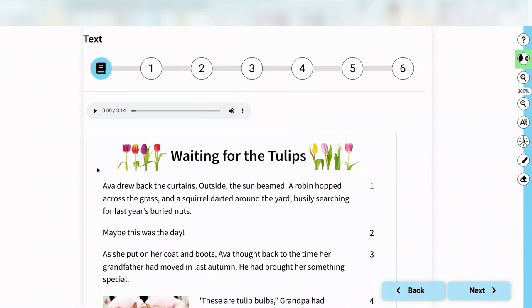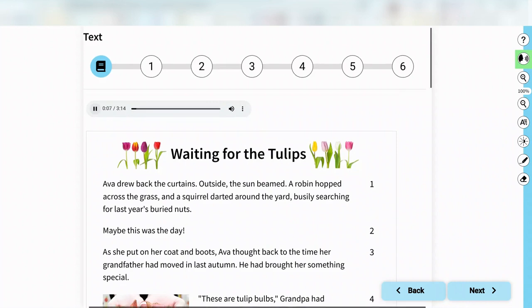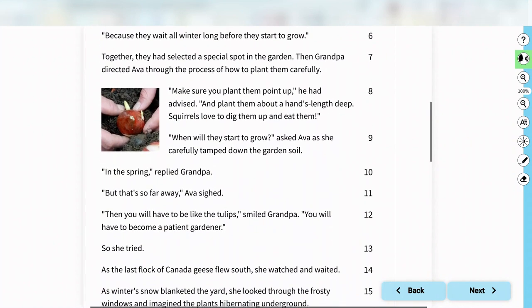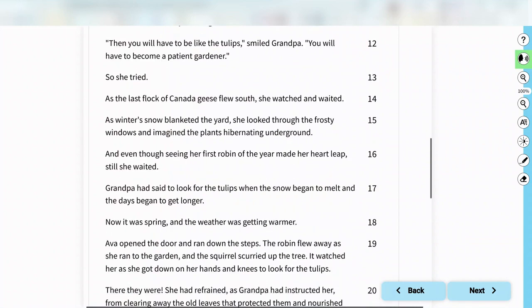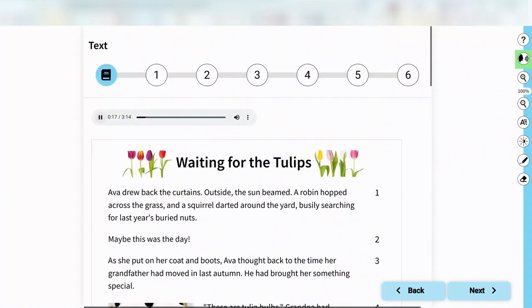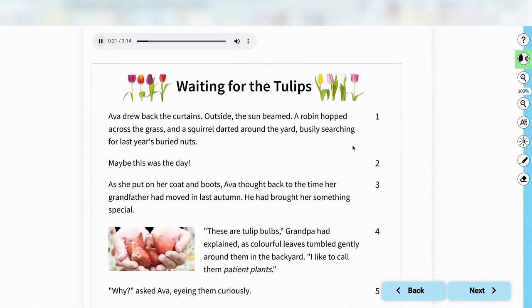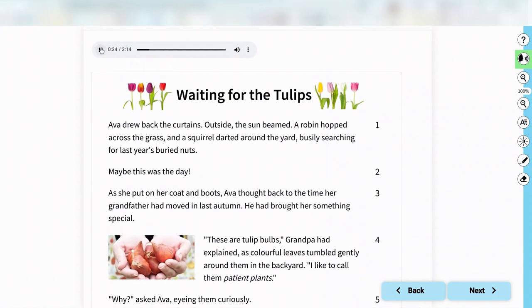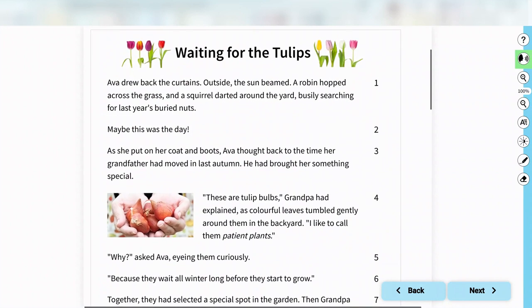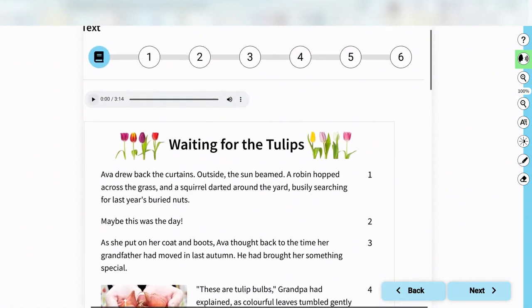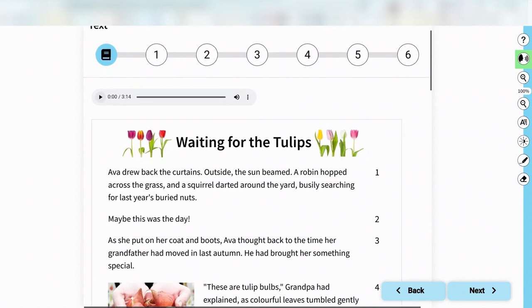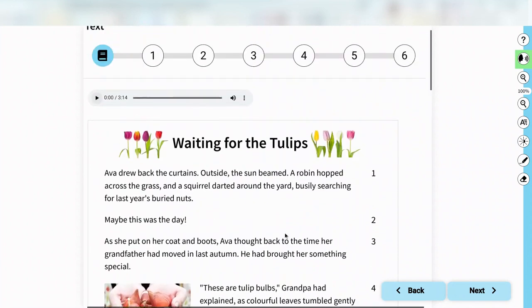This is your volume. I'm going to click play. Waiting for the tulips. There are tulip flowers on either side of the title. There are three pictures in the text. The first picture is of cupped hands holding tulip bulbs. The second picture is of hands planting a tulip bulb. The third picture is of a plant starting to grow out of the ground. Ava drew back the curtains. Outside, the sun beamed, a robin hopped across the grass and a squirrel darted around the yard. Notice that when I clicked play, it also read what images were on the document as well. So be prepared for any of that text to speech being read to you to also describe the images that might be in the document.